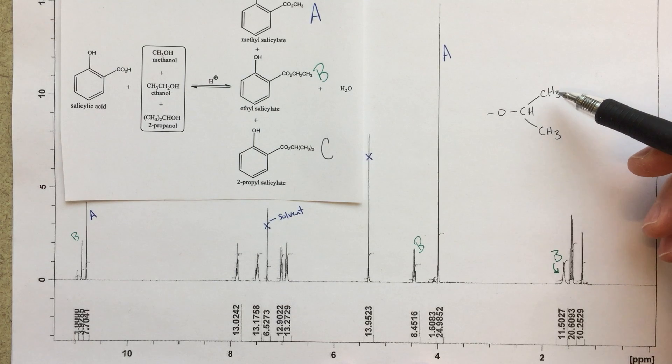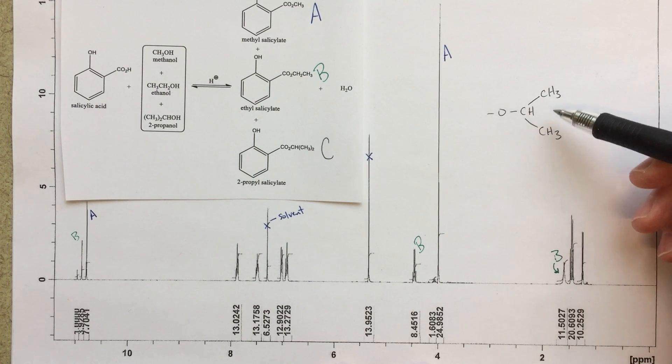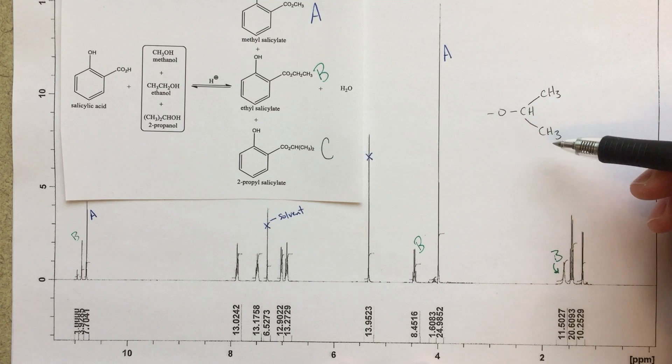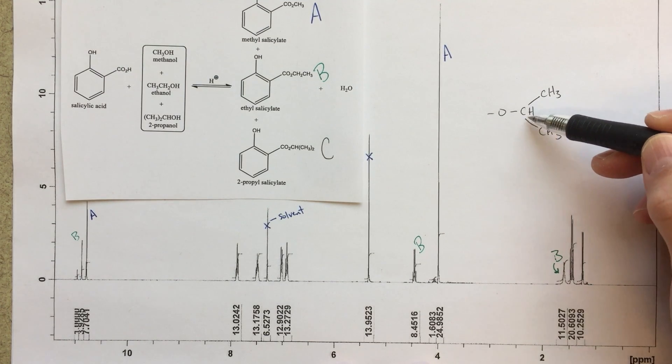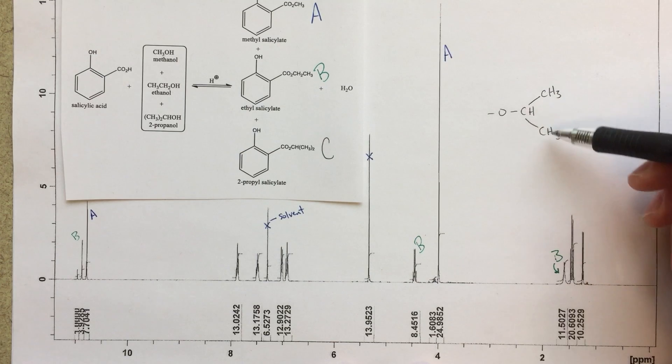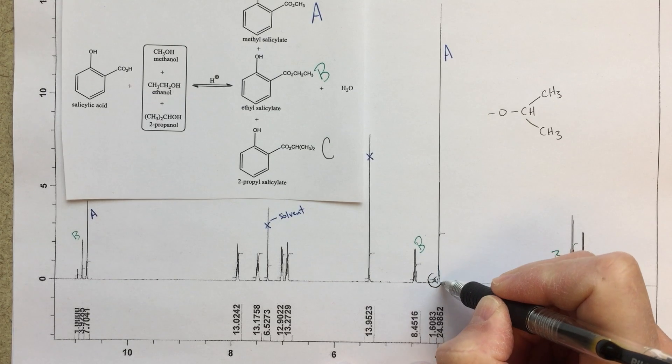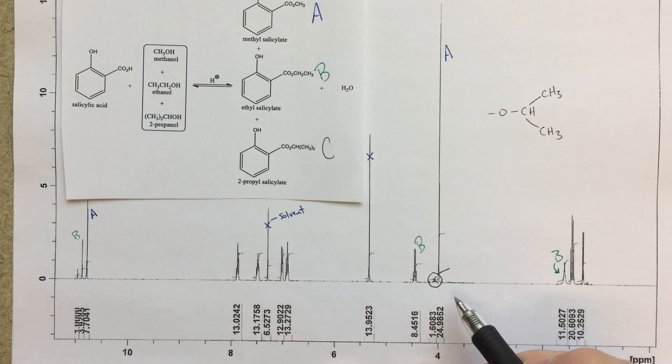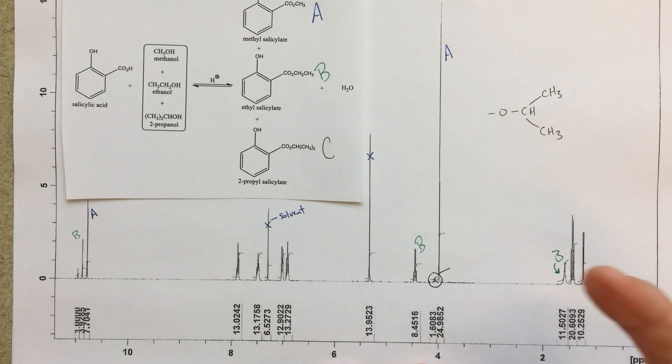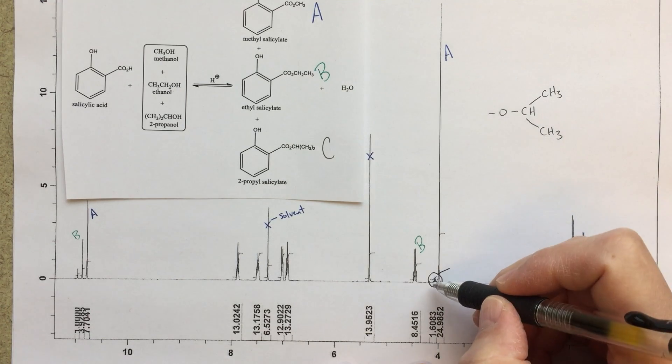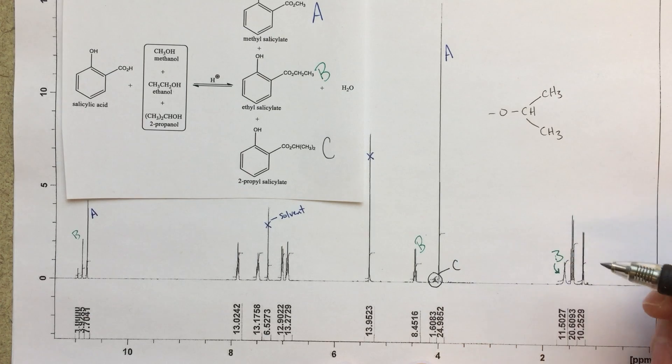So what I'm looking for would be a six-high doublet. So these methyl groups, they're going to be chemically equivalent, and so they should be a doublet. They should be six high, and then they should also be a doublet because of the CH group here. And then we're going to look for a one-high septet that's being split into seven different peaks by these methyl groups. So right here, it's sort of hard to see, but if we sort of zoom in, we can see this little, little peak here that should integrate to relatively one, right?